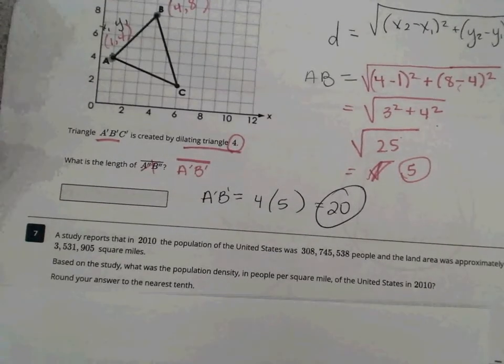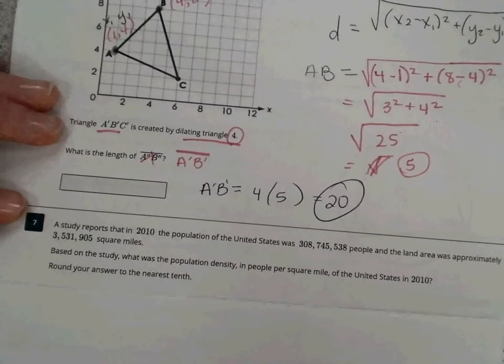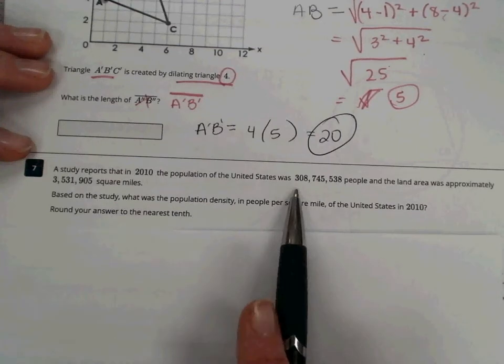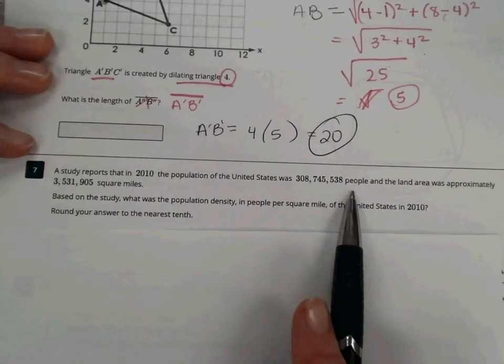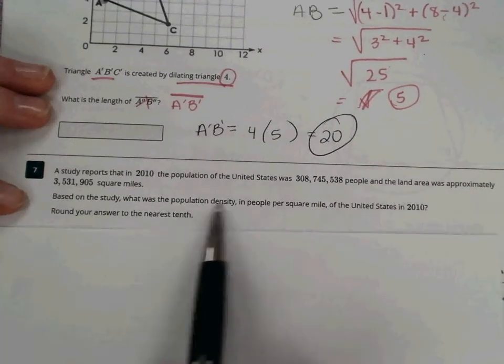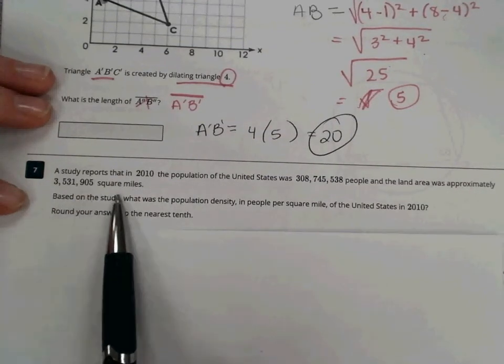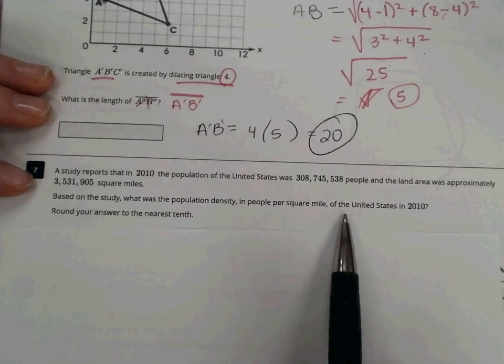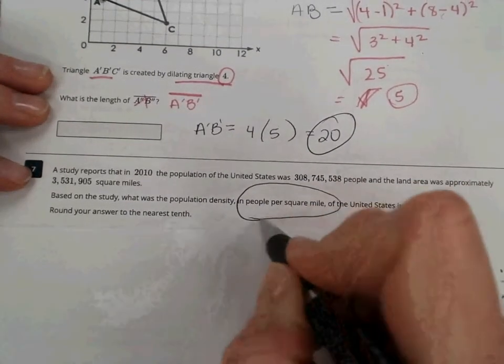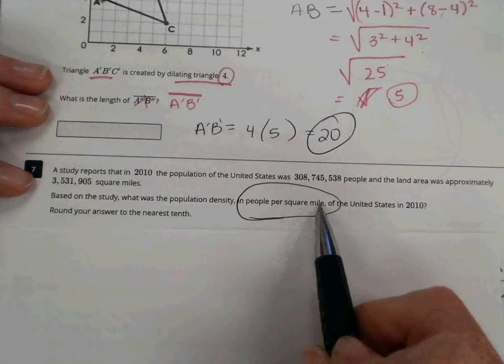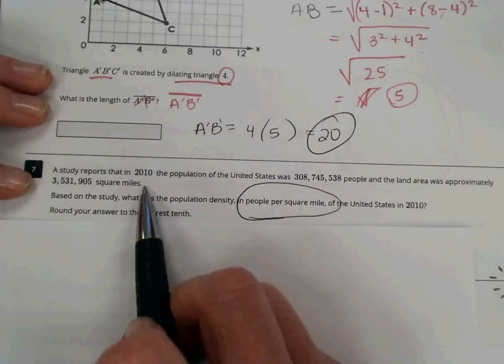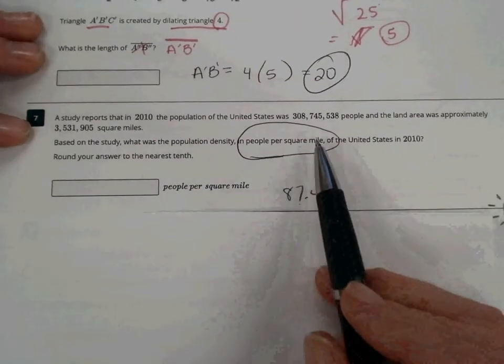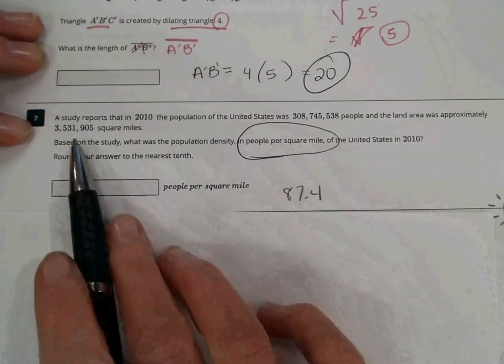That's the easiest way to do that. There's a variety of ways you could do that. Number 7. A study reports that in 2010, the population of the United States was 308,745,538 people. And the land area was approximately 3,531,905 square miles. Based on the study, what was the population density in people per square mile? Again, this is similar to a question we saw in the last test. People per square mile. All we need to do here is divide these two numbers. It's a simple calculation. Round to the nearest tenth. We get 87.5. We literally enter this number in our calculator, divide by this number.